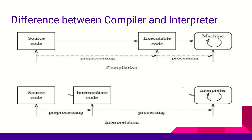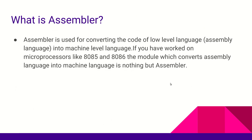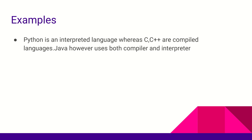An assembler is the module that converts assembly language — a low-level language — into machine language. For example, with 8085 or 8086 microprocessors, which are 16-bit and 32-bit processors, you write code in assembly language programming and the assembler converts it into machine code, which the CPU then executes.